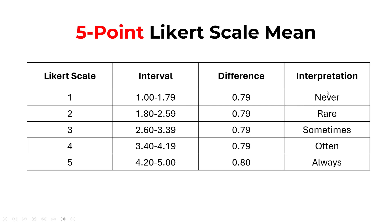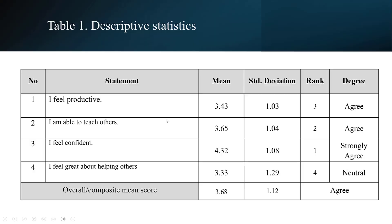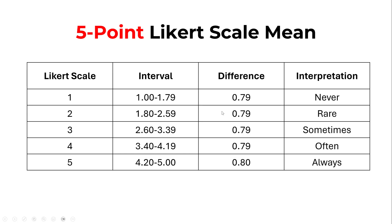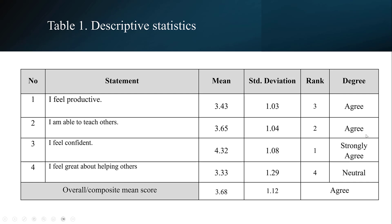We take each interval and assign an interpretation to it. For example, suppose we have a mean of 3.43 based on agreement. Looking at the table, 3.43 falls within the range 3.40 to 4.19, which corresponds to agree — or often in case of frequency. So we put the interpretation depending on the mean score.